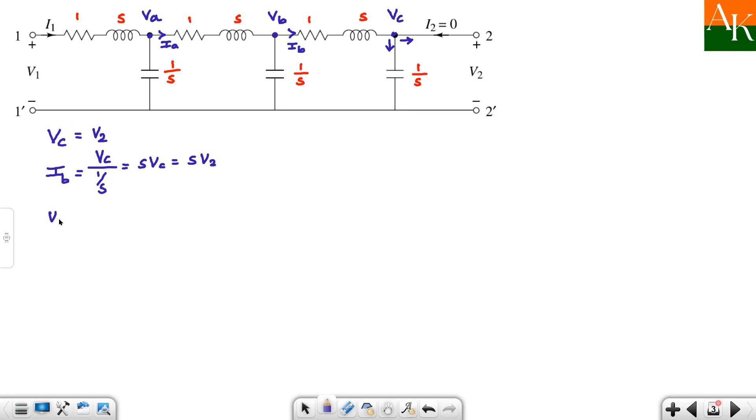Next you have to write down about vb. Vb is nothing but ib into this impedance. In previous lectures the impedance was just one, but now they gave two impedances. But that should not matter a lot. Both impedances are connected in series, so that will become s plus 1. So ib into s plus 1 plus next nodal voltage vc. Here you will have s times (s plus 1) v2, and vc is nothing but v2. So this becomes (s² + s + 1) v2. So we have found vb.